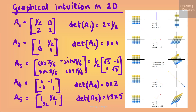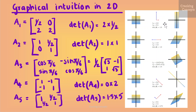Now we look into the graphical intuition in two dimensions where we are given five transformation matrices A1 to A5 and their impact on a square grid of points centered at the origin. The first matrix A1 transforms it such that the direction of the two eigenvectors correspond to the canonical basis vectors in R², i.e. the two cardinal axes. The vertical axis is extended by a factor of 2, so eigenvalue λ1 = 2, and the horizontal axis is compressed by a factor of half, so λ2 = 1/2. The mapping is area-preserving, thus det(A1) = 2 × (1/2) = 1.